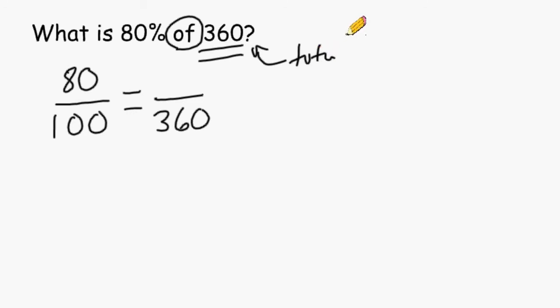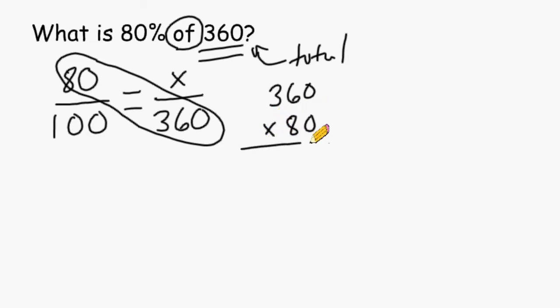So how much out of 360 is equal to 80 out of 100? Well to figure out this unknown value, we can start by multiplying 80 by 360. Because this place value starts with a zero, we can just drop that down. And then we multiply 8 times this zero, which is zero. 8 times 6 is 48, we carry the 4. 8 times 3 is 24, plus 4 more is 28. So we have a product of 28,800.